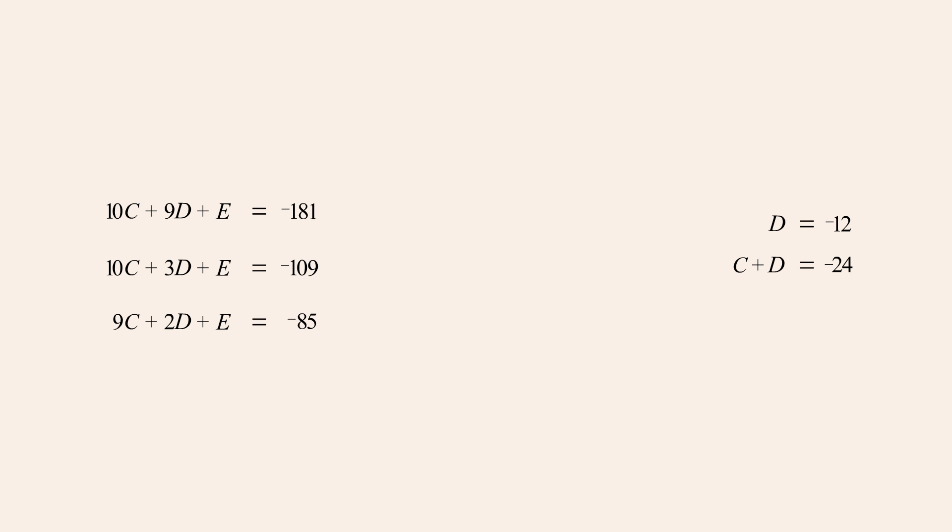The value of c can now be found by substituting negative twelve for d in the bottom equation.